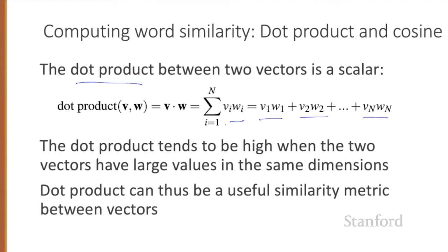The dot product acts as a similarity metric because it will tend to be high just when the two vectors have large values in the same dimension. Alternatively, vectors that have zeros in different dimensions — orthogonal vectors — will have a dot product of zero, representing their strong dissimilarity.